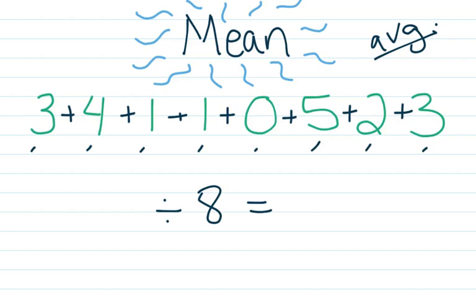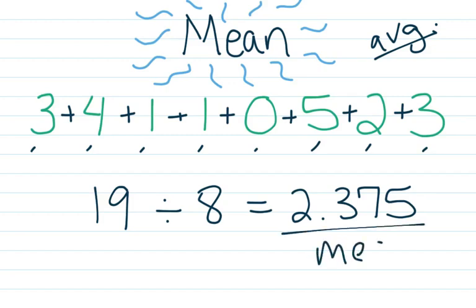When I added up all these numbers together, I got 19, and 19 divided by 8 gave me 2.375. That's my mean of this data set. The average of this data set is 2.375.